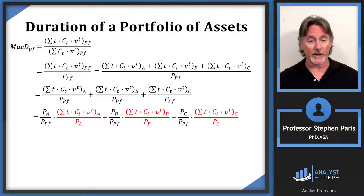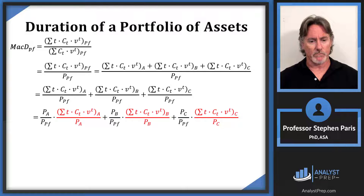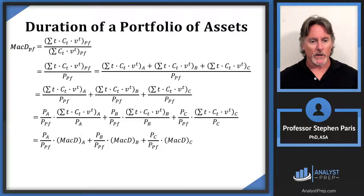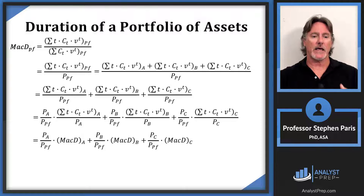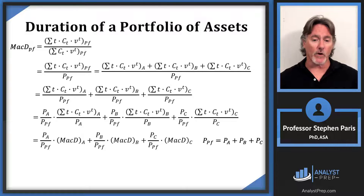Highlighting in red: the first expression is nothing more than the Macaulay duration of bond A. The second is the Macaulay duration of bond B, and the third is the Macaulay duration of bond C. So the Macaulay duration of the portfolio equals the price of asset A divided by the price of the portfolio, times the Macaulay duration of bond A, plus two similar terms.